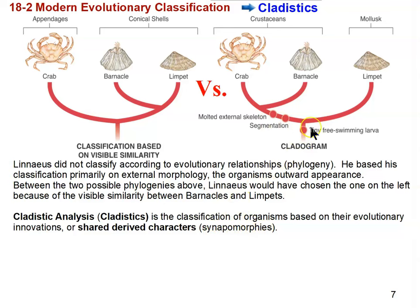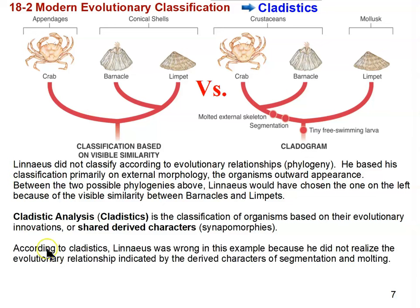And that's what we're seeing in this cladogram. These evolutionary innovations — like tiny free-swimming larvae, segmentation, and a molted external skeleton — are the kind of derived characters we're talking about. So based on cladistics, Linnaeus was wrong in this case because he didn't realize the evolutionary relationship indicated by these derived characters.